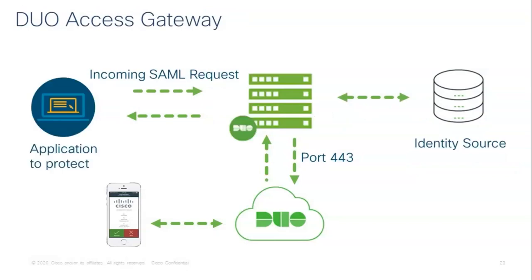The next component is the Duo Access Gateway (DAG) — also an on-premises software service that receives authentication requests from your local protected applications via SAML. The protected cloud or local applications will direct users to the Duo Access Gateway on your network. DAG acts as a SAML identity provider, authenticating users using your existing primary authentication source for credential verification, and then prompting for two-factor authentication before permitting access to the SAML application. SAML — Security Assertion Markup Language — is an XML-based standard for the overall authentication process, involving terms like service provider and identity provider.